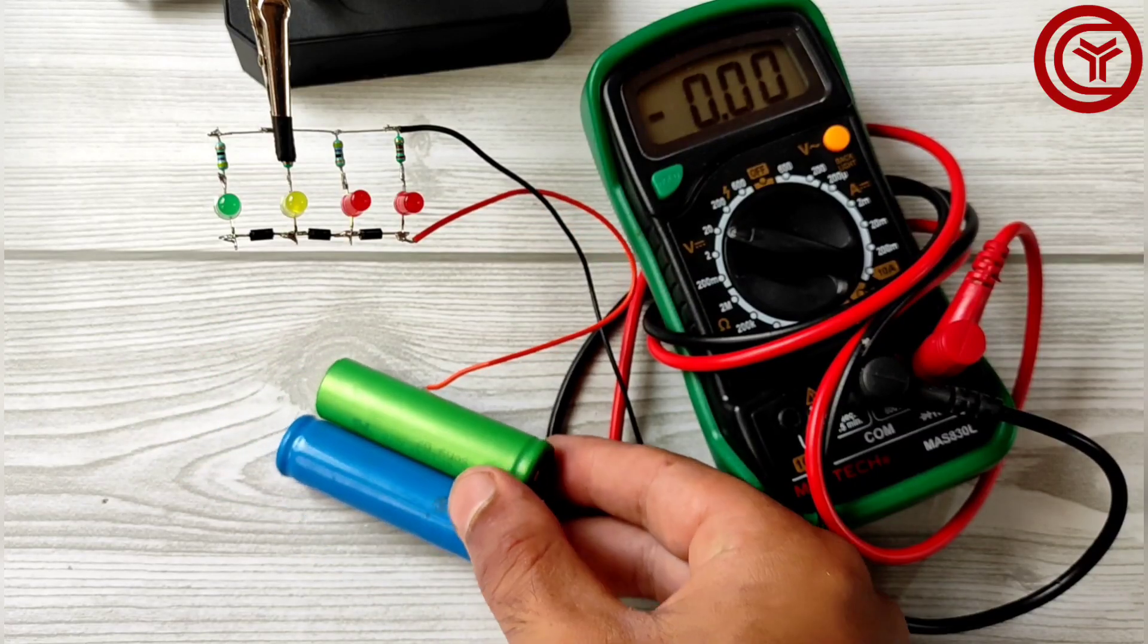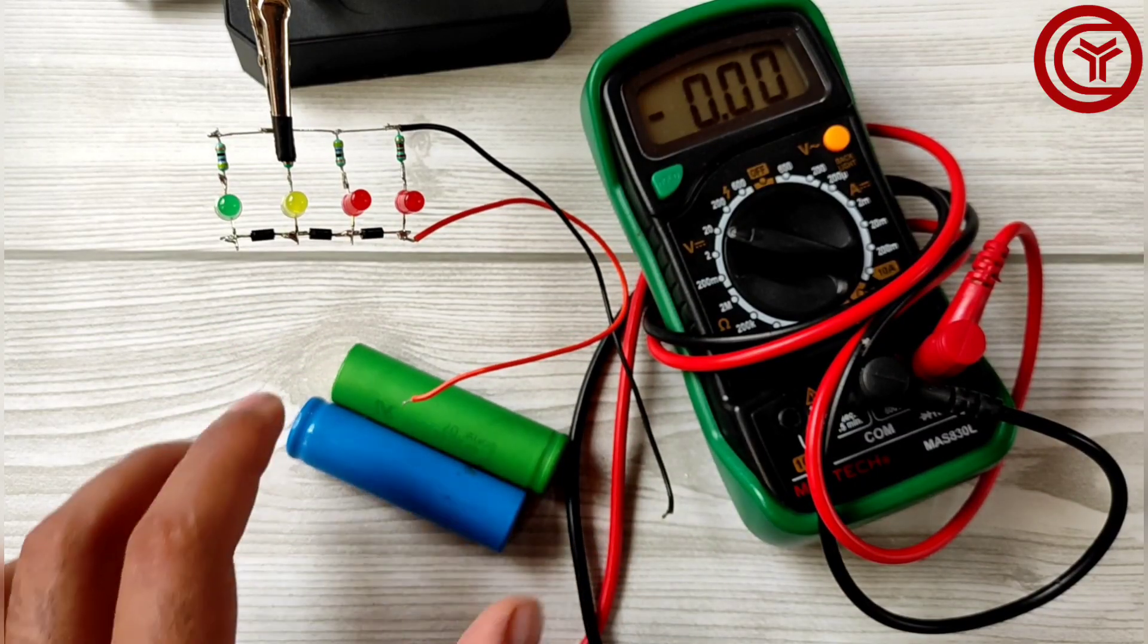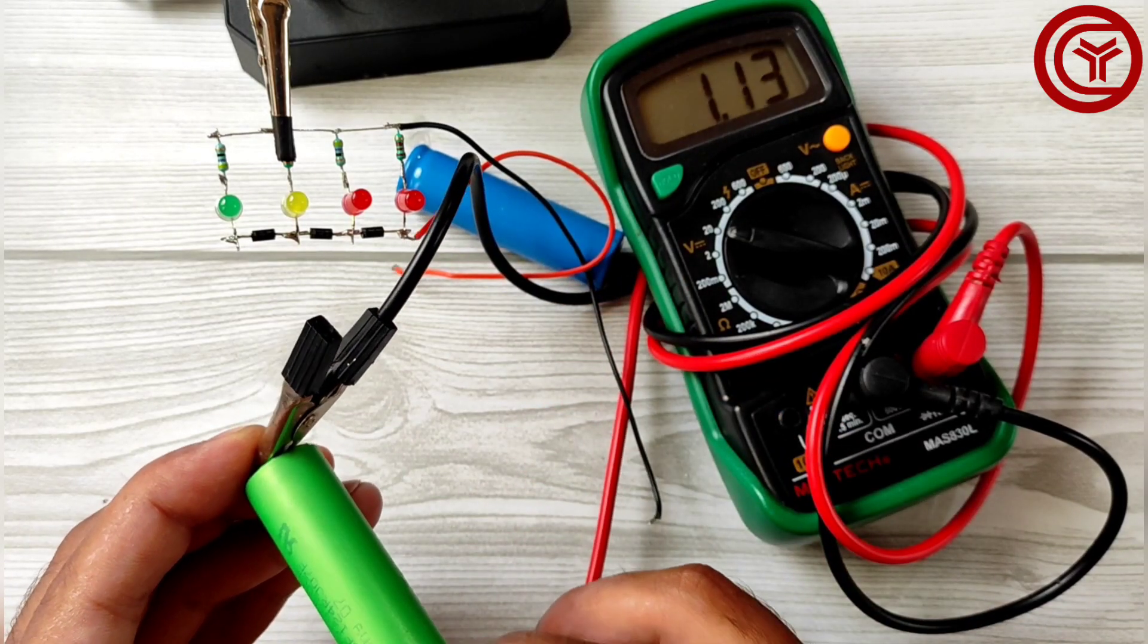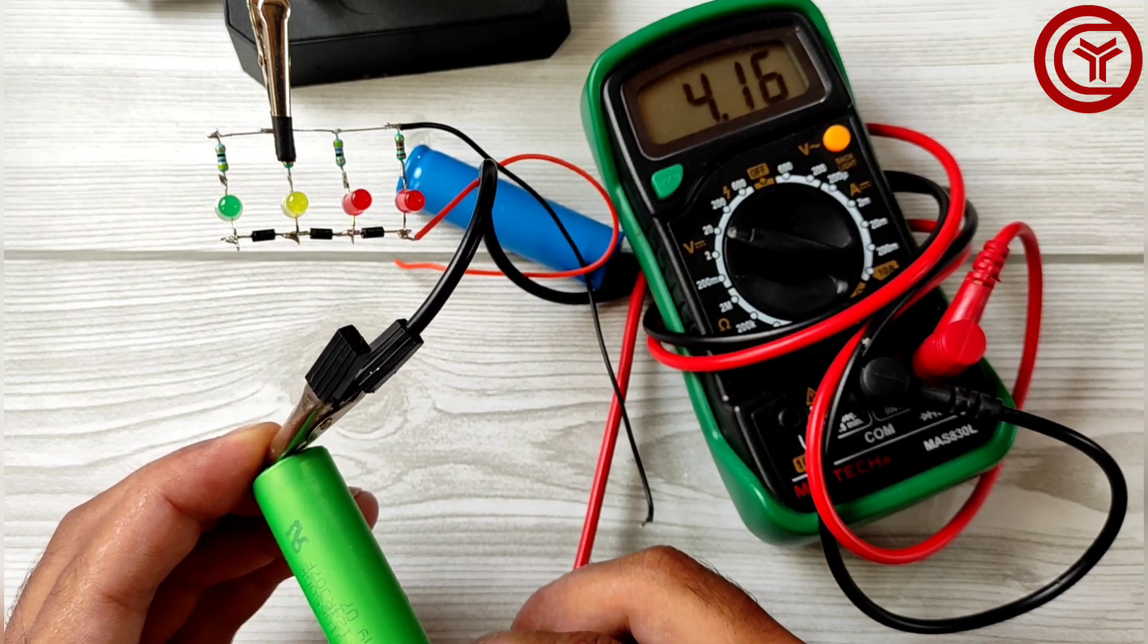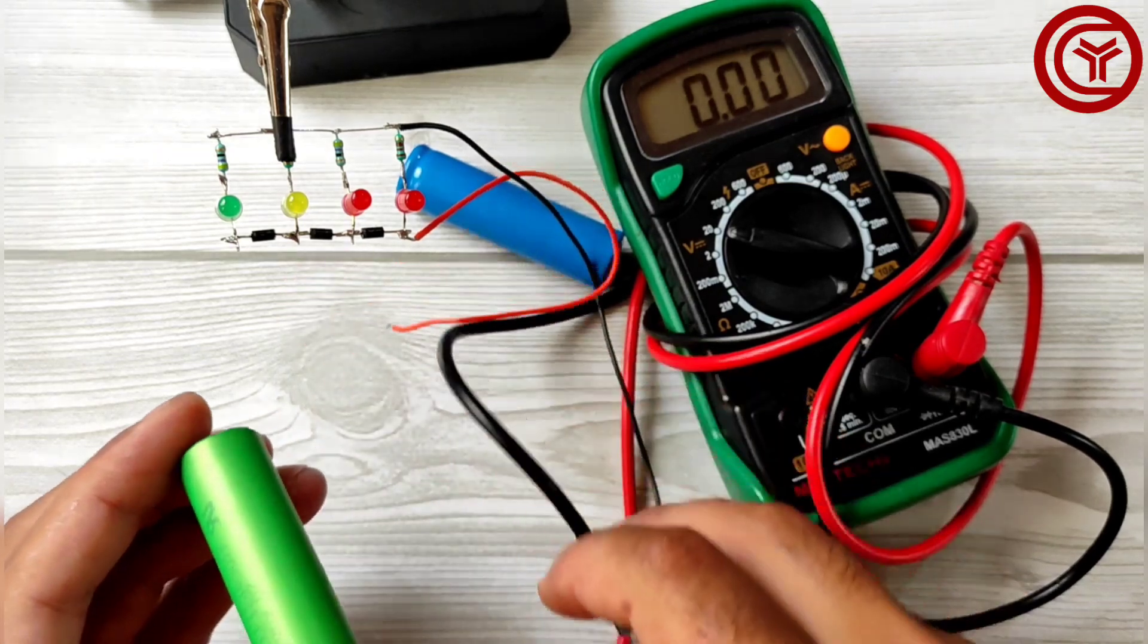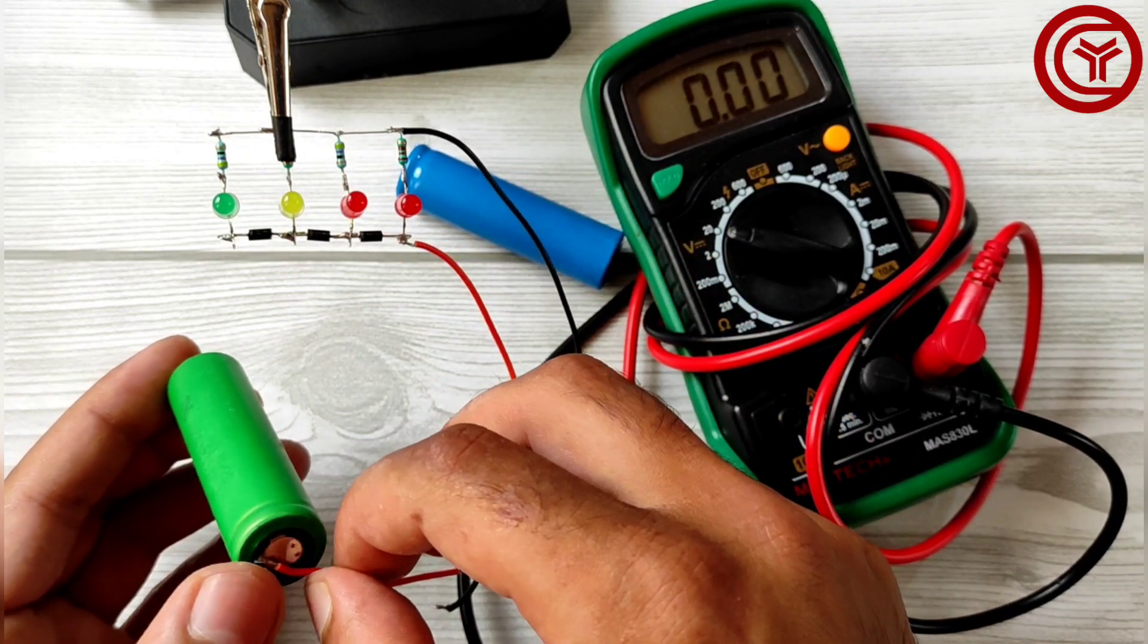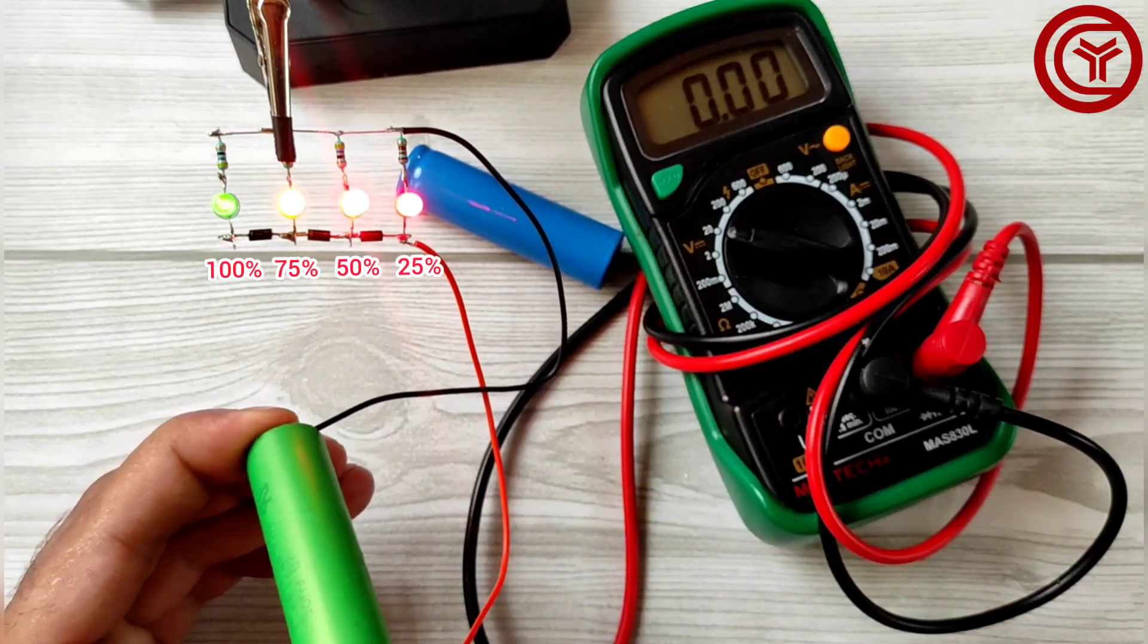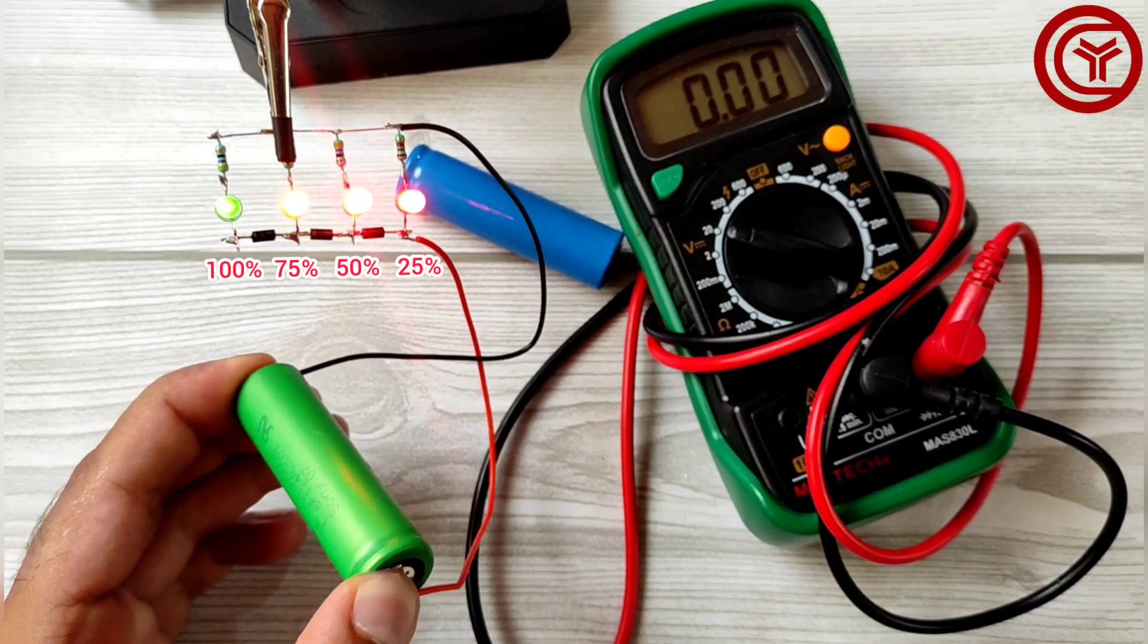Now let's test circuit with lithium batteries. This battery is charged to 4.16 volts, means it's full. Now connect with circuit. It also shows full level.